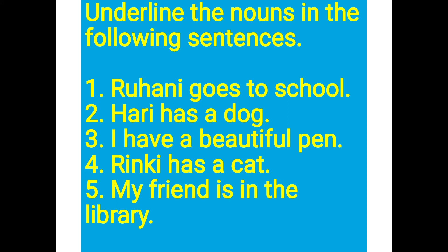Let us solve this question on the basis of our understanding. Underline the nouns in the following sentences. First sentence: Ruhani goes to school. Ruhani is the name of a person, so it is a noun. 'Goes' and 'to' are not names of a person, place, animal, or thing. School is the name of a place, so school is also a noun.